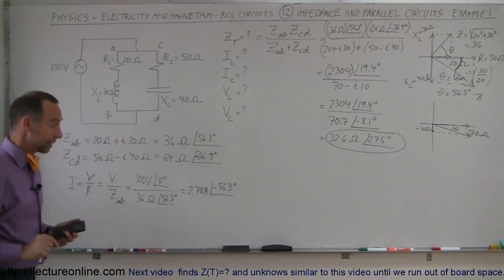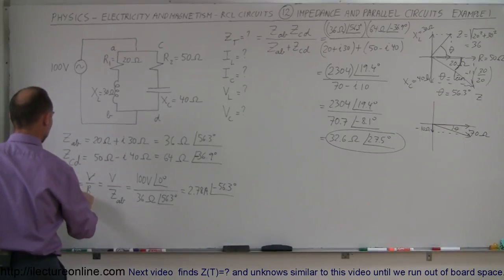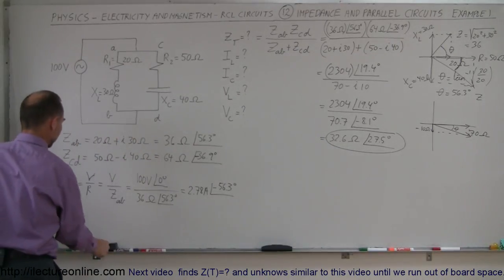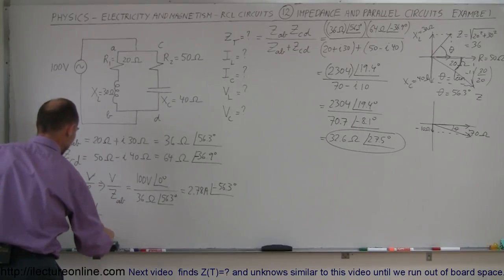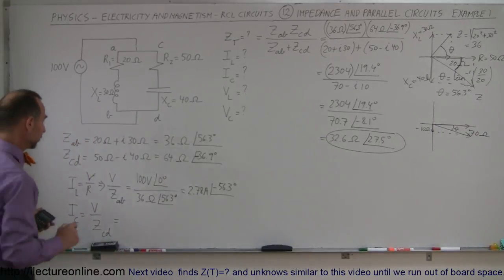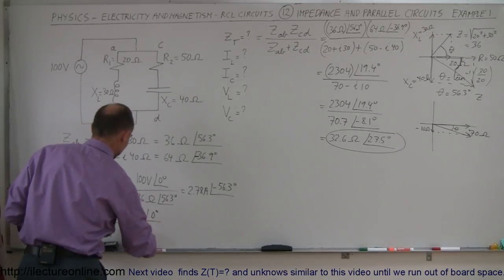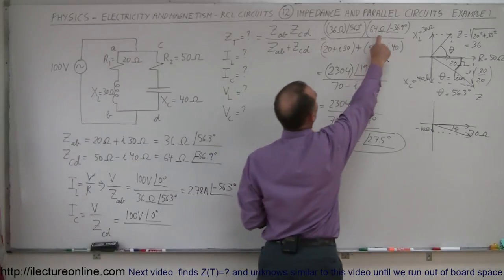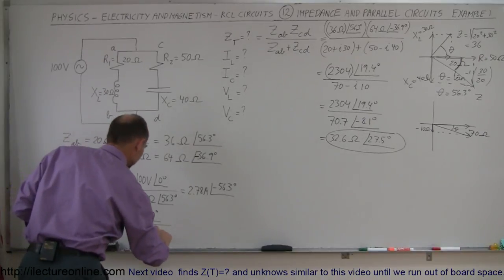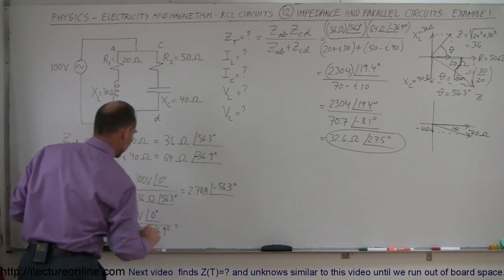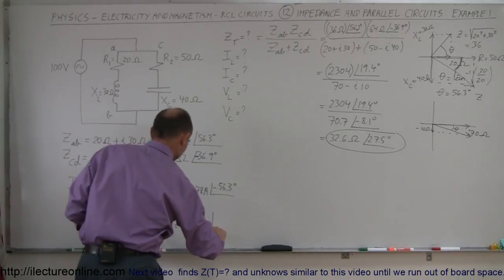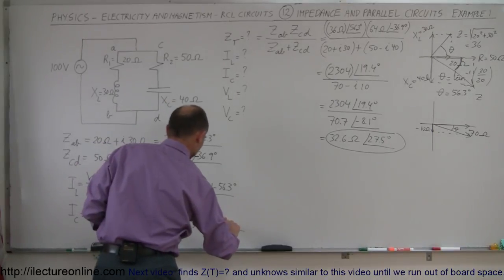The current through the capacitor branch is the source voltage divided by the impedance from C to D: 100 volts at 0 degrees divided by 64 ohms at minus 36.9 degrees. That gives 1.56 amps at a phase angle of positive 36.9 degrees.